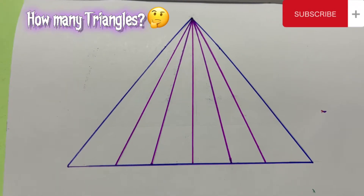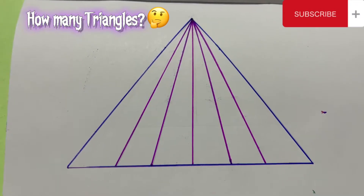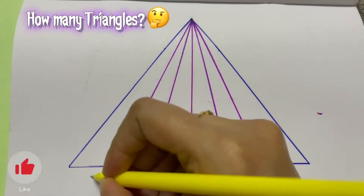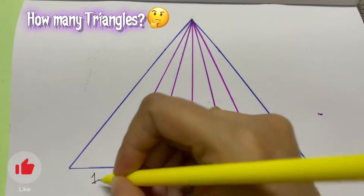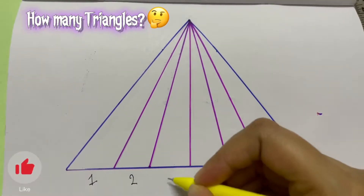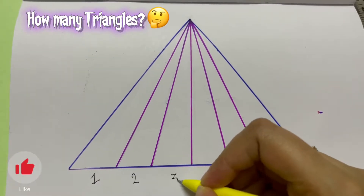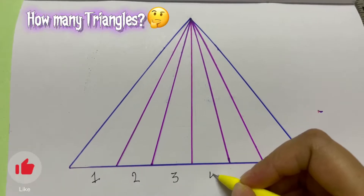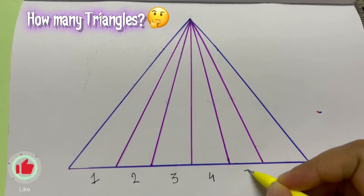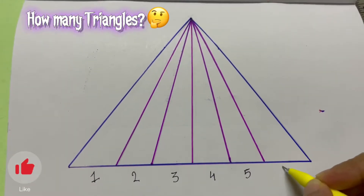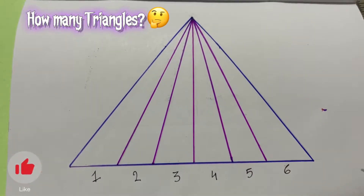How many triangles are there? Let's just count: 1, 2, 3, 4, 5, 6.